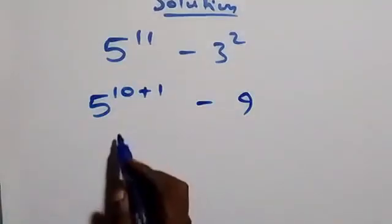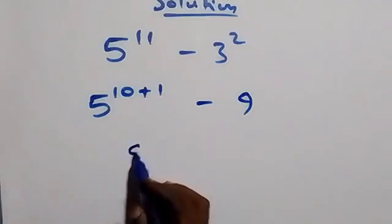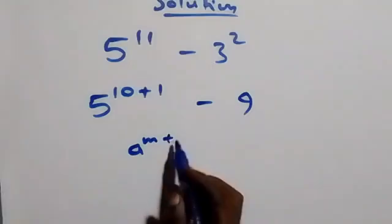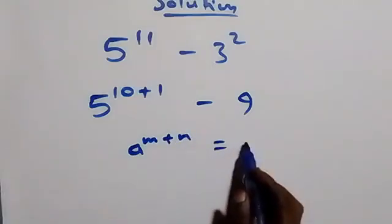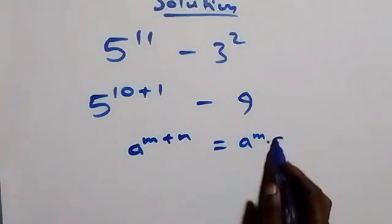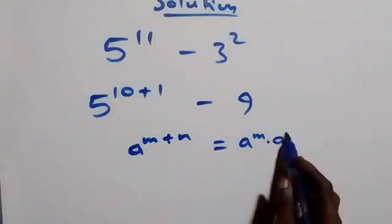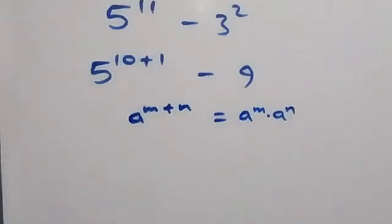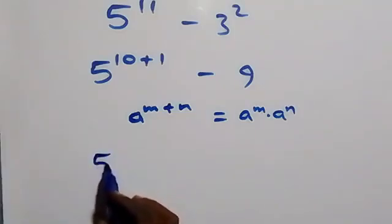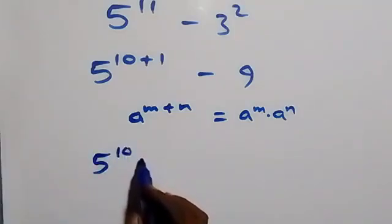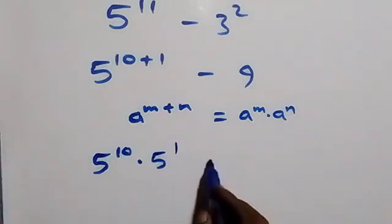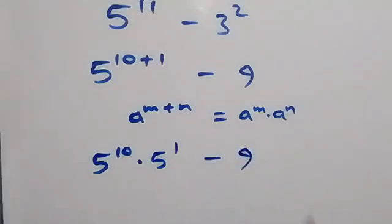From here, when we apply the law of indices — a raised to power m plus n is the same thing as a raised to power m times a raised to power n — that gives us 5 raised to power 10 times 5 raised to power 1, then minus 9.